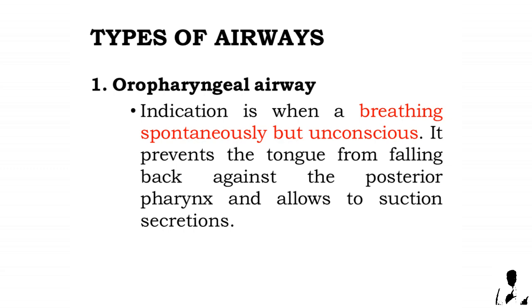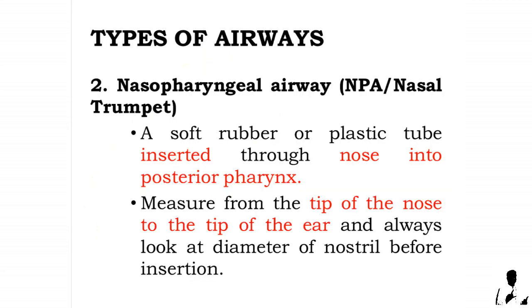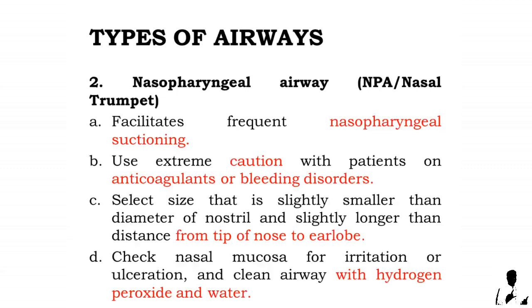Two: the nasopharyngeal airway, or NPA, also called a nasal trumpet. It is a soft rubber or plastic tube inserted through the nose into the posterior pharynx. Measure from the tip of the nose to the tip of the ear, and always check the diameter of the nostril before insertion. It facilitates frequent nasopharyngeal suctioning and should be used with extreme caution in patients on anticoagulants or with bleeding disorders.